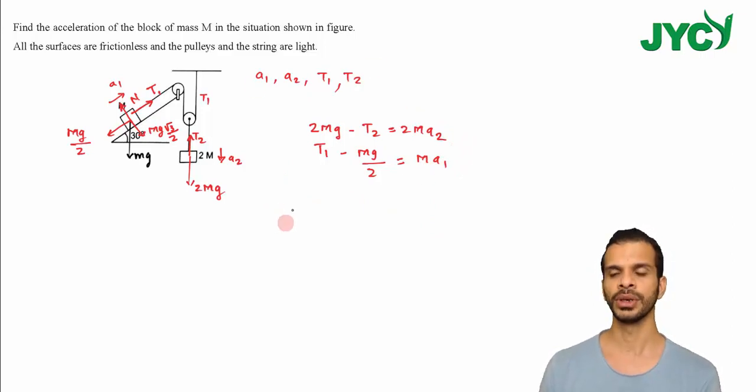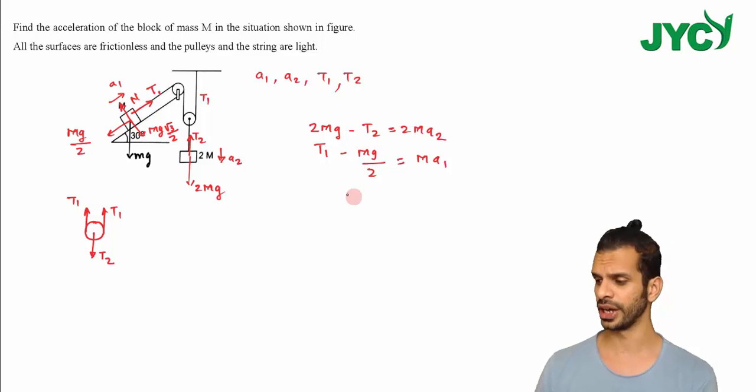I need 4 equations. Another equation is the FBD of this pulley. In the pulley, tension T1 is pulling it upward, this tension T1 is also pulling it upward, and T2 is pulling it downward. So T2 equals 2T1. This is the third equation.